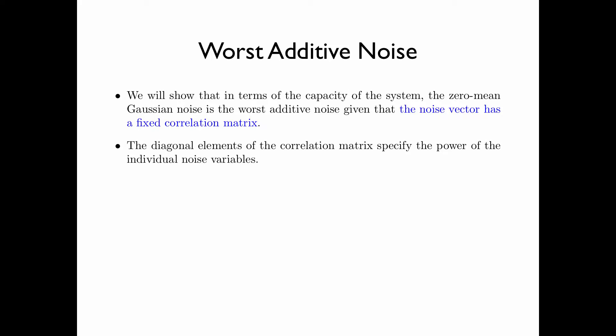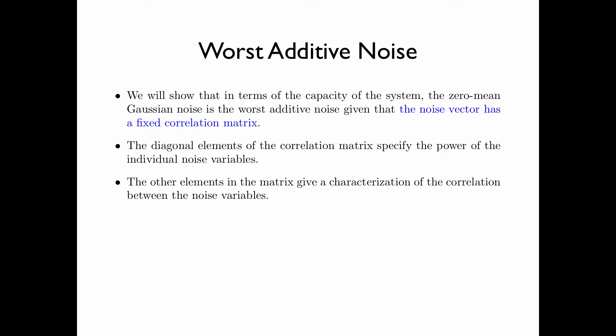For the scalar case, when we fix the correlation matrix, it is equivalent to fixing the power of the noise process. For the vector case, the diagonal elements of the correlation matrix specify the power of the individual noise variables, and the other elements in the matrix give a characterization of the correlation between the noise variables.